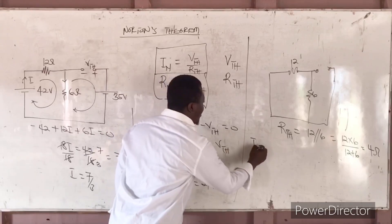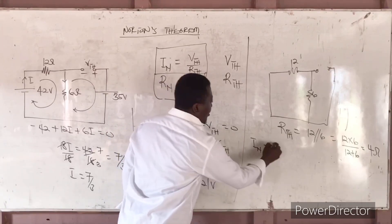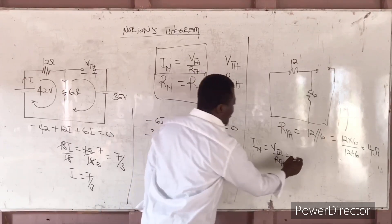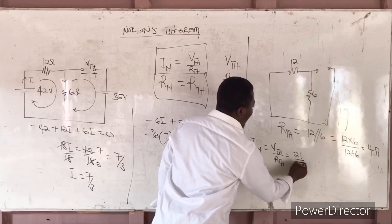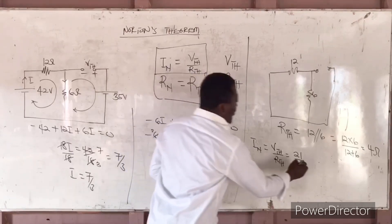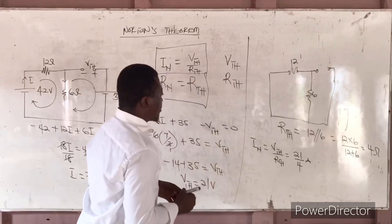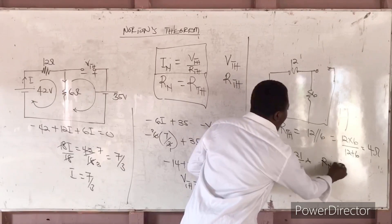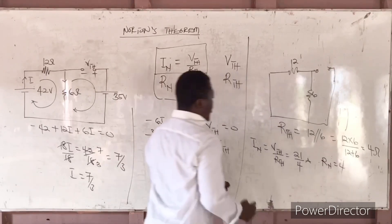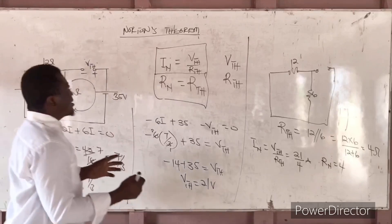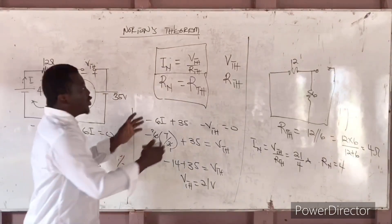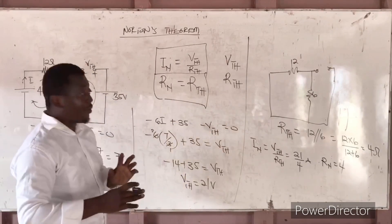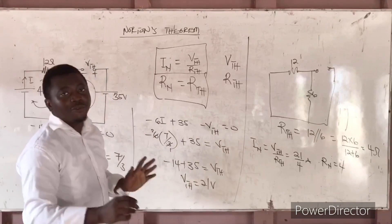We are doing Norton. So how can we get our IN? To get IN, IN is given by VTH over RTH. And this is 21 over 4, so we have 21 over 4 ohms. And our IN is also equal to... So at the end, this is the most important part.